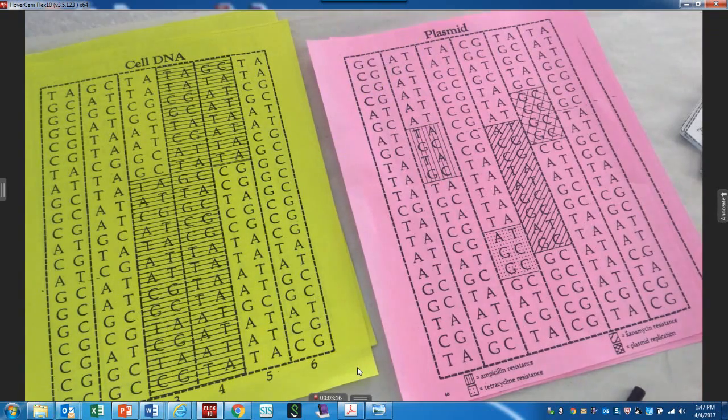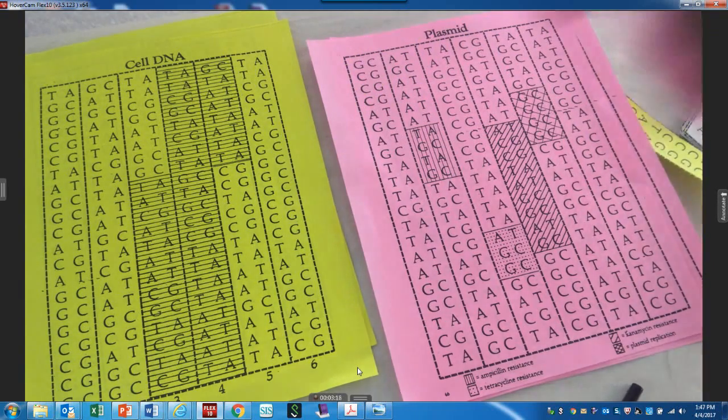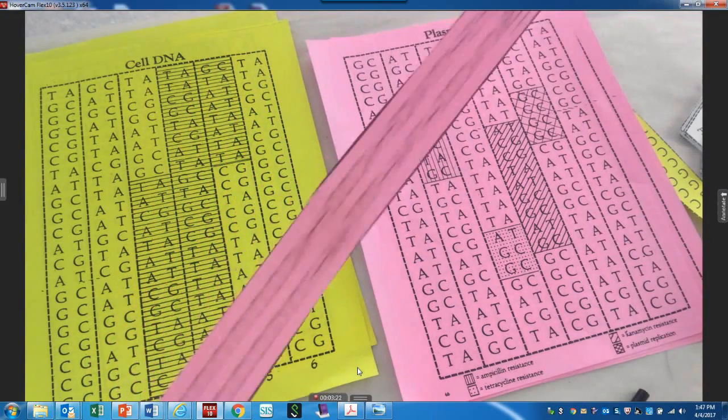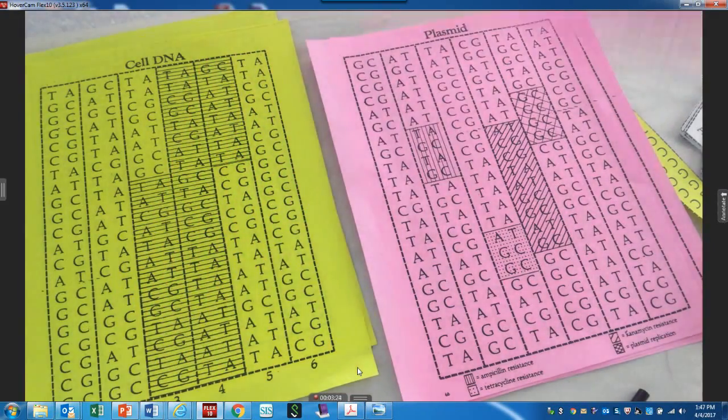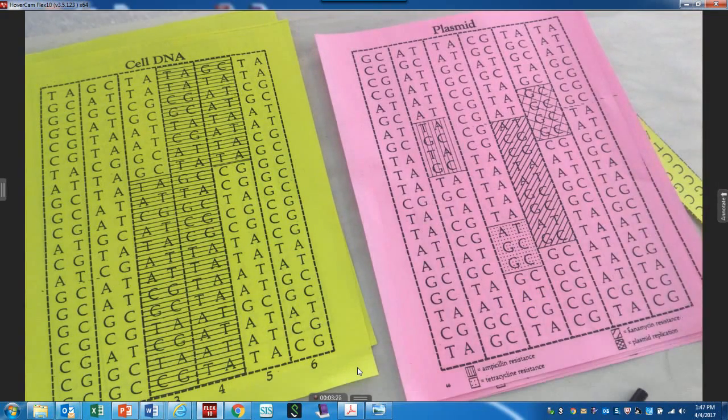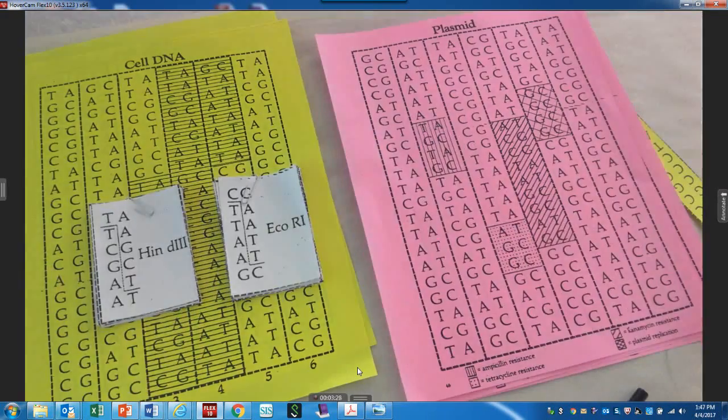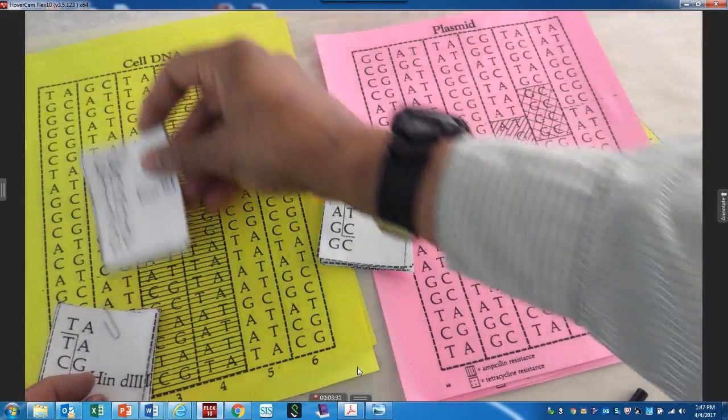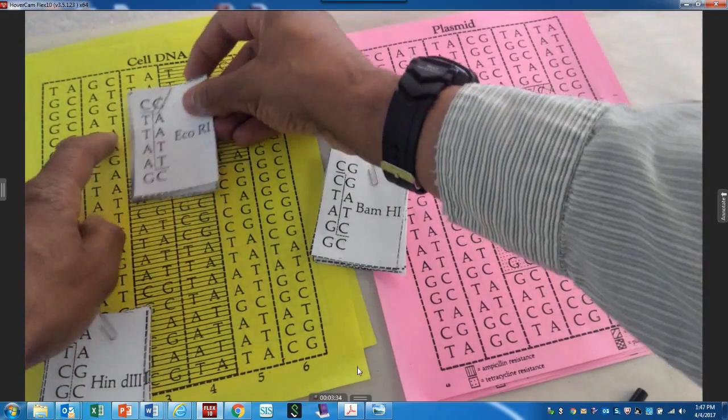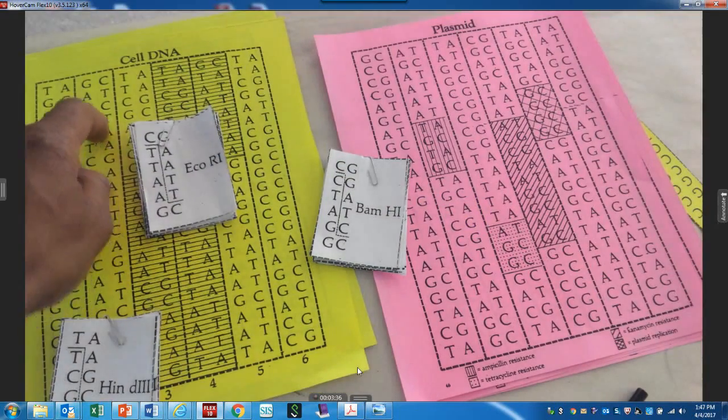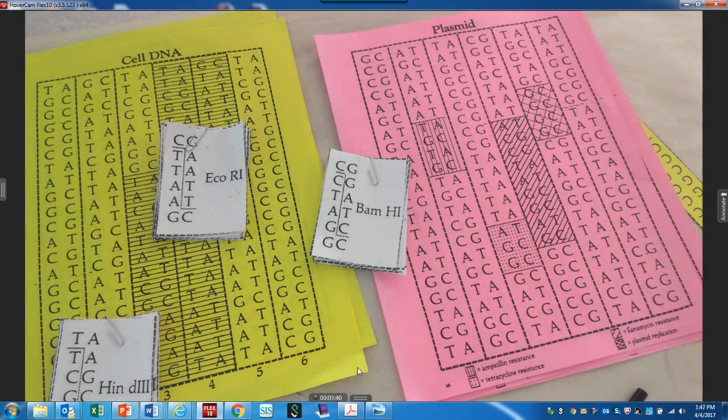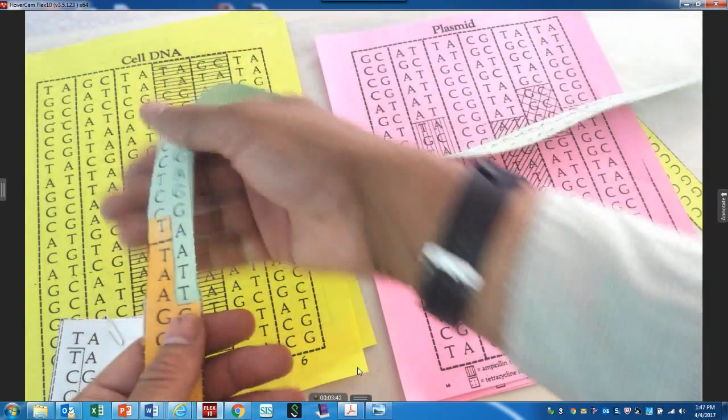Then they randomly, and this is going to be different for every group, you're going to put together your plasmid. And then what you have to do is you're going to get three restriction enzymes and what you have to do is go through and find the match. When you find your match, you're going to cut it out.